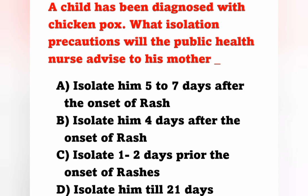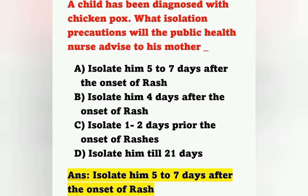Next question: A child has been diagnosed with chickenpox. What isolation precautions will the public health nurse advise to his mother? Option A: Isolate him five to seven days after the onset of rash; Option B: Isolate him four days after the onset of rash; Option C: Isolate one to two days prior to the onset of rash; Option D: Isolate him till 21 days. Chickenpox is caused by Varicella zoster and is highly infectious. The isolation period is five to seven days after the onset of rash. Option A is correct.